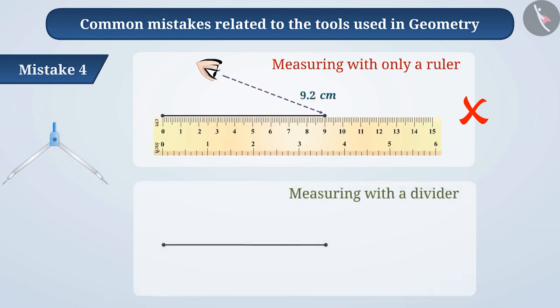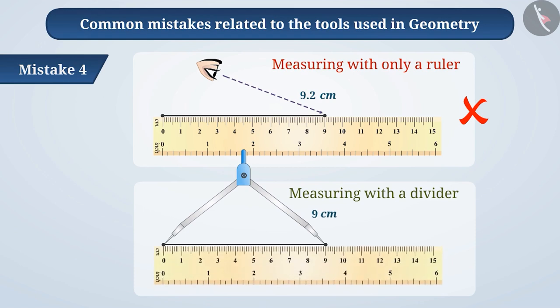The pointed ends of the divider can be placed on the line segment and the correct mark of the line. This can help us avoid any mistakes in measurement.